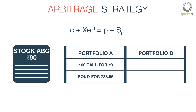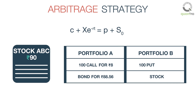In portfolio B, we again buy two things: a put option and a stock. The right-hand side of the put-call parity equation is portfolio B. We buy the put option with the same underlying and strike price as the call option, but priced at Rs.12.